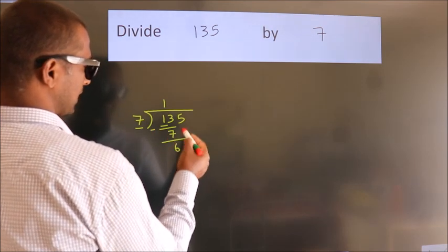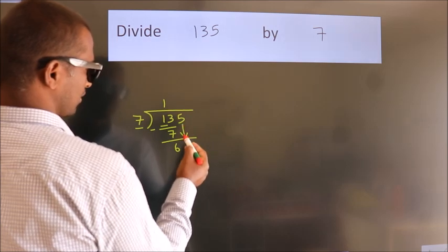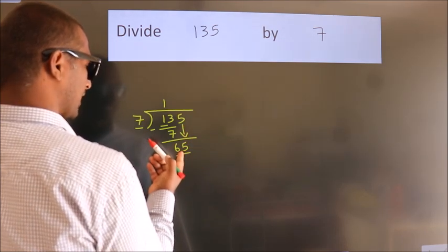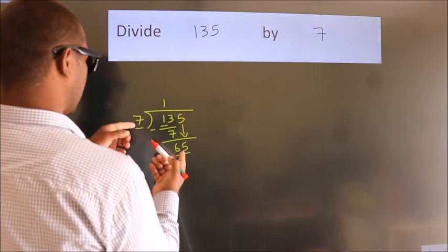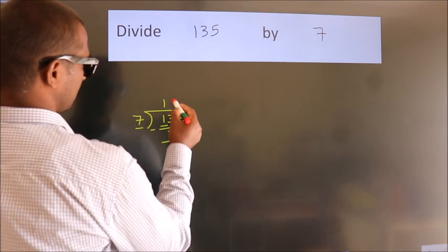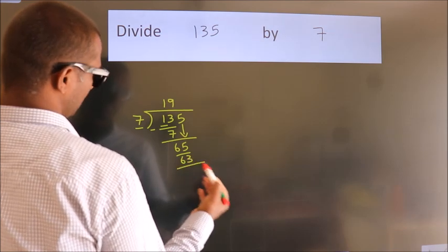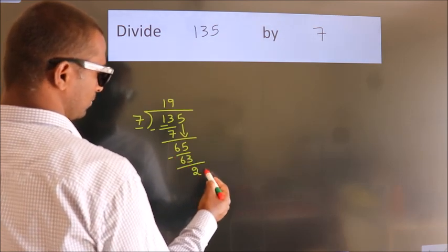After this, bring down the next number. So 5 down. So 65. A number close to 65 in the 7 table is 7 times 9 is 63. Now we subtract. We get 2.